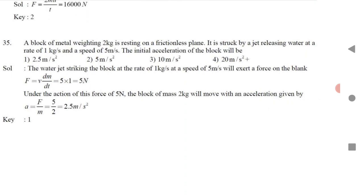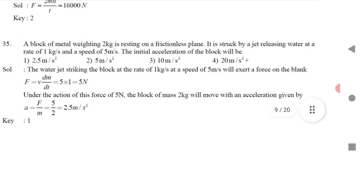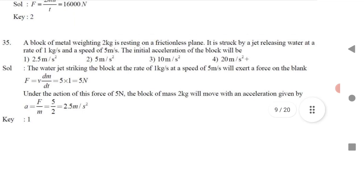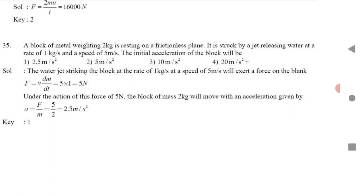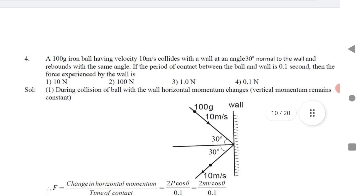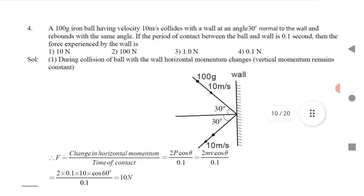Question 18: A block of metal weighing 2 kg resting on a frictionless plane is struck by a jet of water at a certain rate in kg/s. Whenever water is released at a rate in kg per second, it means dm/dt. The force formula is F = v × (dm/dt). Substitute to get the force, then find acceleration as a = F/m.